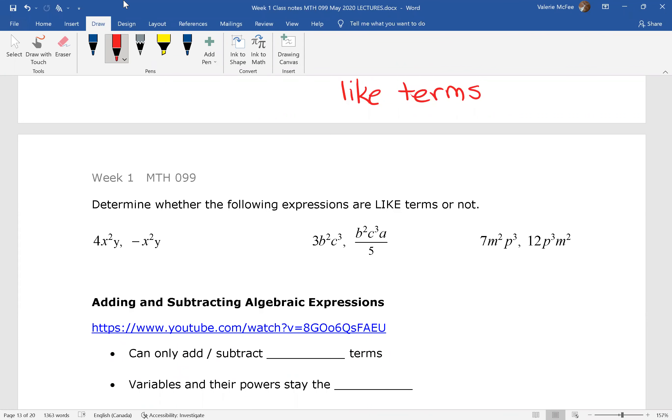So look at these examples here. 4x squared y, negative x squared y. Are these like terms? Yes, they are. The x squared y is the same in both of them. Pause your video and decide whether or not the next two are like terms. This one is not. There's an a in this expression. There's not an a in the second one. This one is - order doesn't matter. They both have m squared. They both have p cubed. These are like terms.